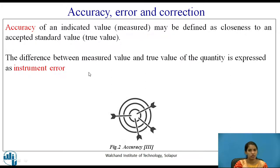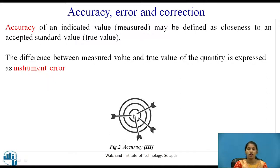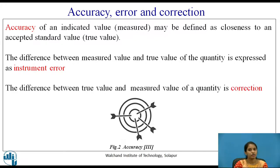The difference between the measured value and true value of the quantity is expressed as instrument error. The bull's eye is the area of interest — the target. All arrows are accurately targeted in the bull's eye region. The difference between true value and measured value of the quantity is known as correction.